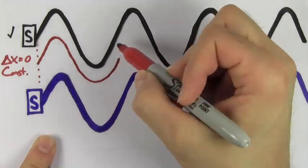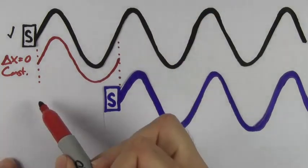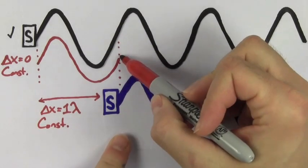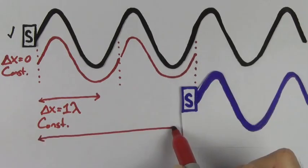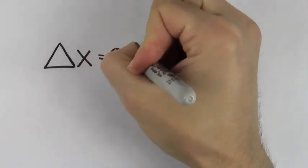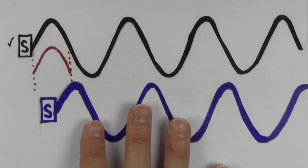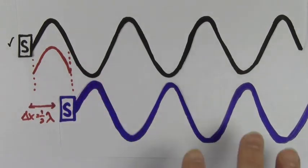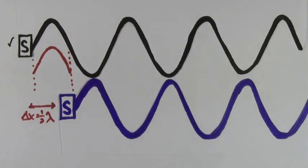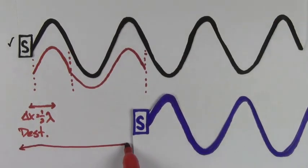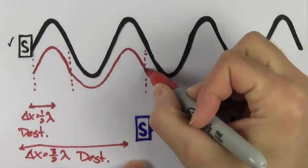If you move one of the speakers forward by one wavelength, the path length difference will be one wavelength, and the two waves still line up perfectly — constructive interference. A path length difference of two wavelengths also gives constructive interference. In fact, path length differences equal to a whole number of wavelengths are always constructive. If instead you create a path length difference equal to a half wavelength, the peaks of one wave will line up with the valleys of the other and you'll get destructive interference. Path length differences equal to a half-integer number of wavelengths are always destructive.